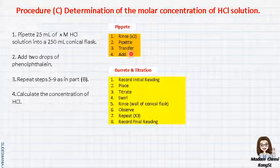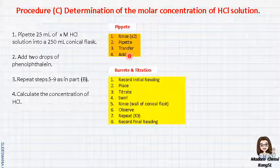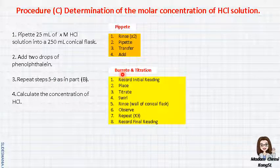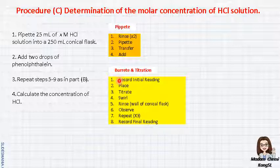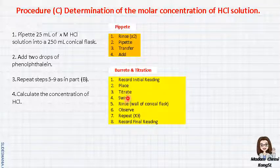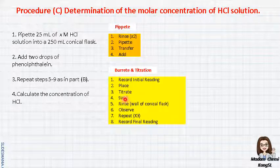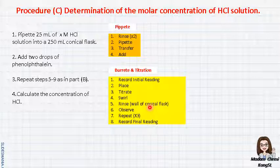The steps are exactly the same as Part B: rinse, pipette, transfer, and add the indicator phenolphthalein. Repeat steps 5 to 9 as in Part B. Record the initial reading for the burette, double-check for any air bubbles and discard them if present. Place a white tile on the retort stand, then start the titration. The sodium hydroxide drops into the conical flask containing HCl. Halfway through, stop and rinse the conical flask with distilled water to ensure acid and base properly react. Observe the changes in colour and repeat 3 times.